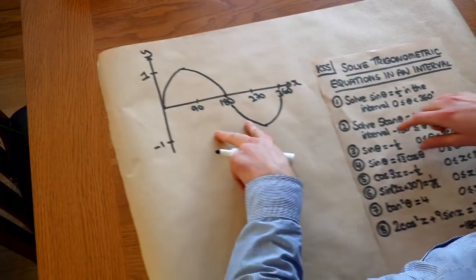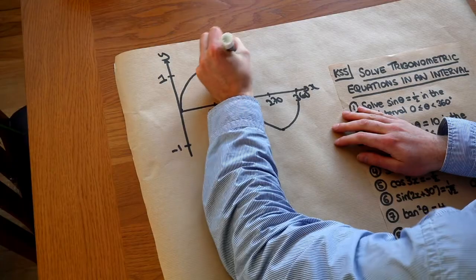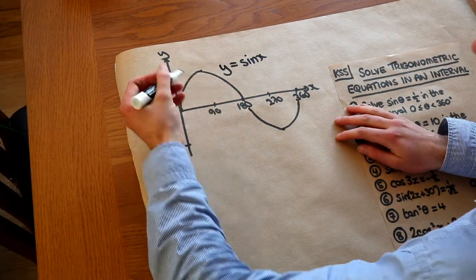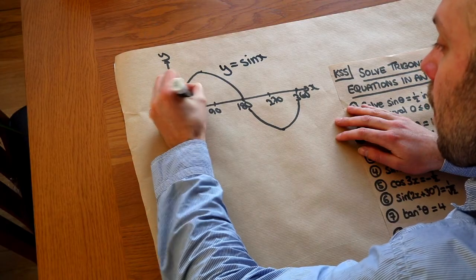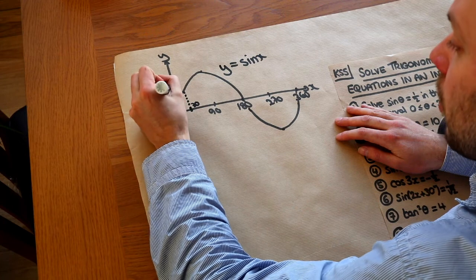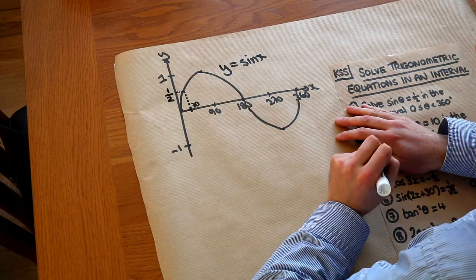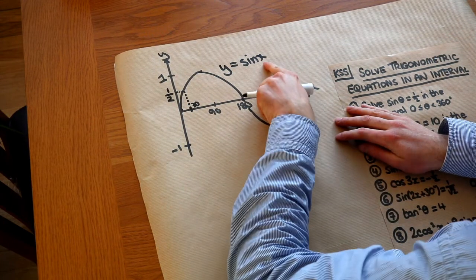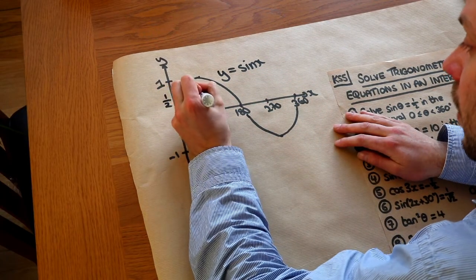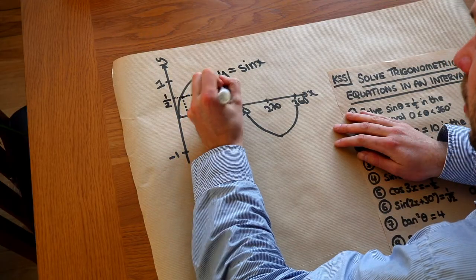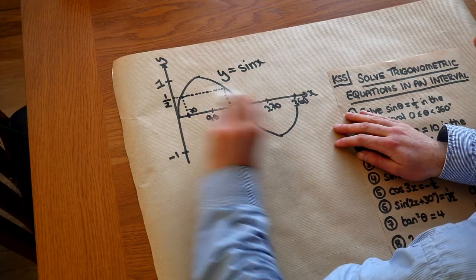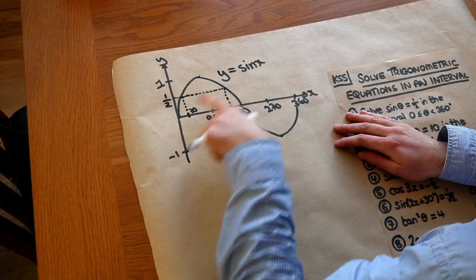Before we go on to solving these, let's consider the graph of y equals sine of x. If you put sine of 30 into a calculator, we would see that we get an output of half — sine of 30 is equal to half. Now can you see another value of x such that when we take sine of it, we also get half? Well, if we go across along the line y equals half, we can see that sine of this other value of x will also give you half.